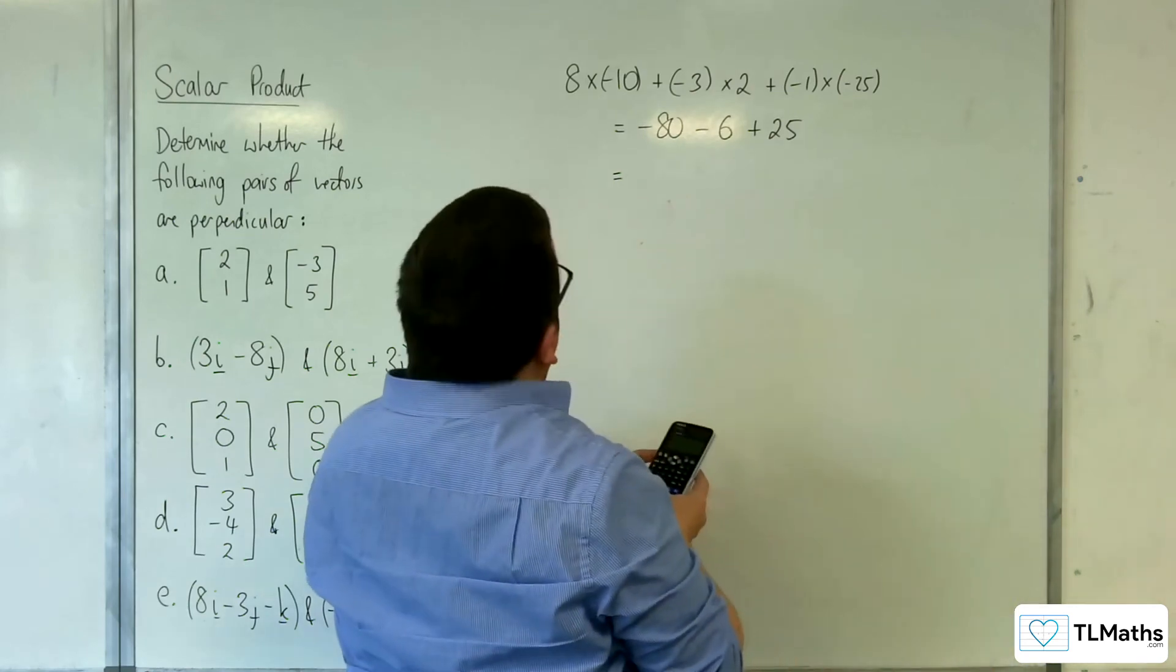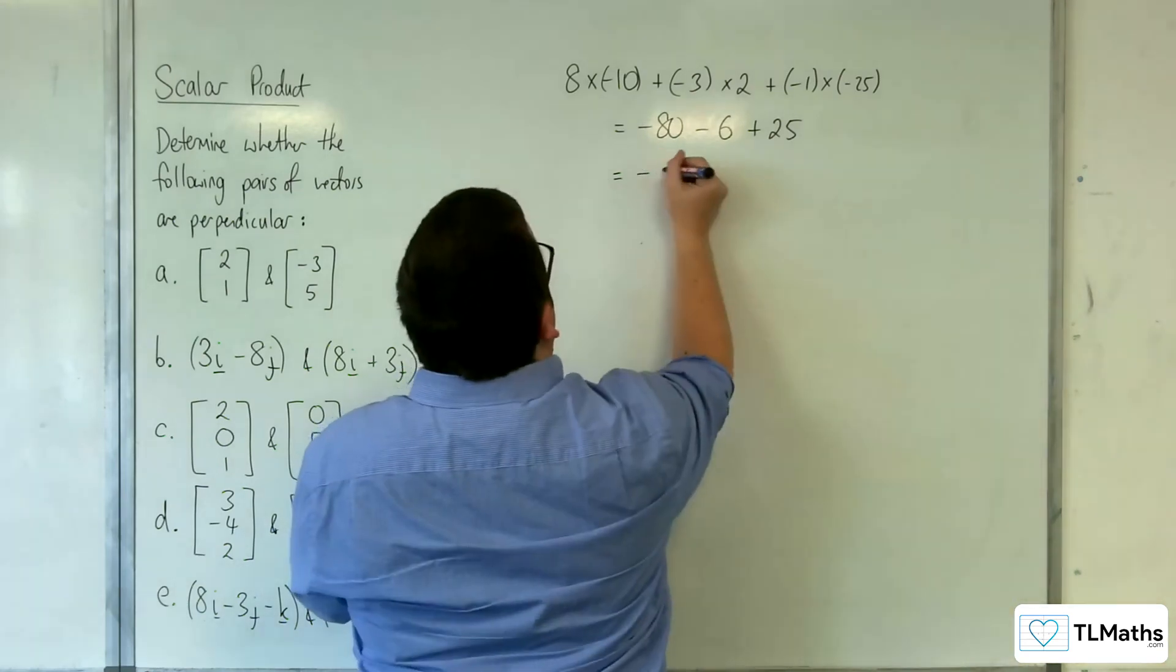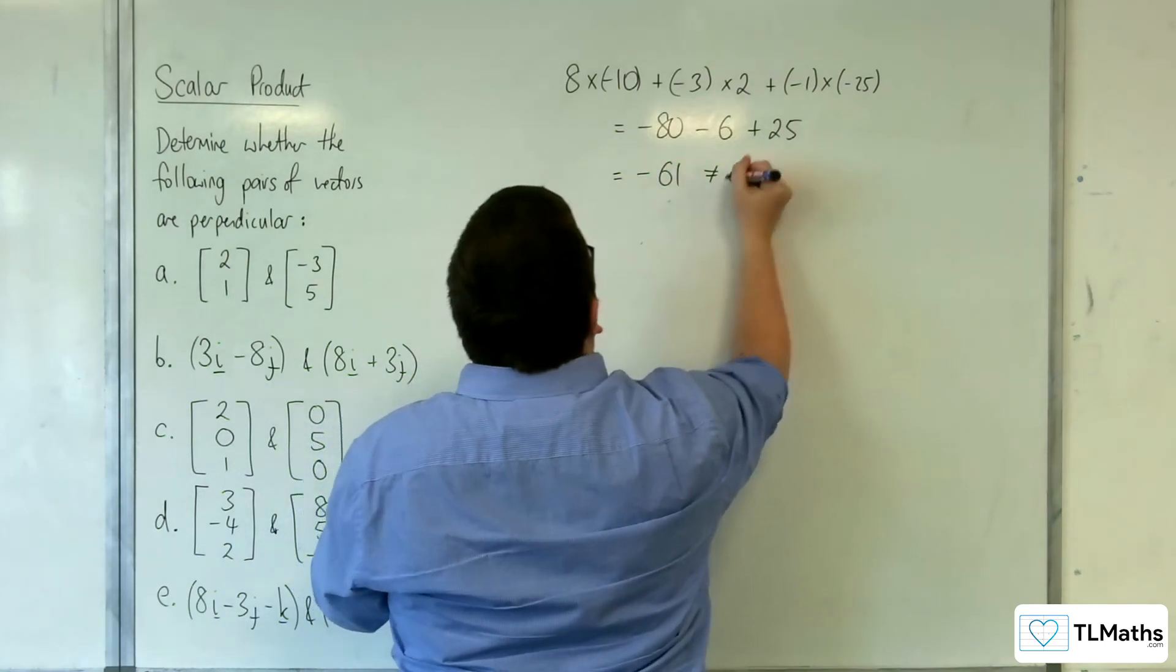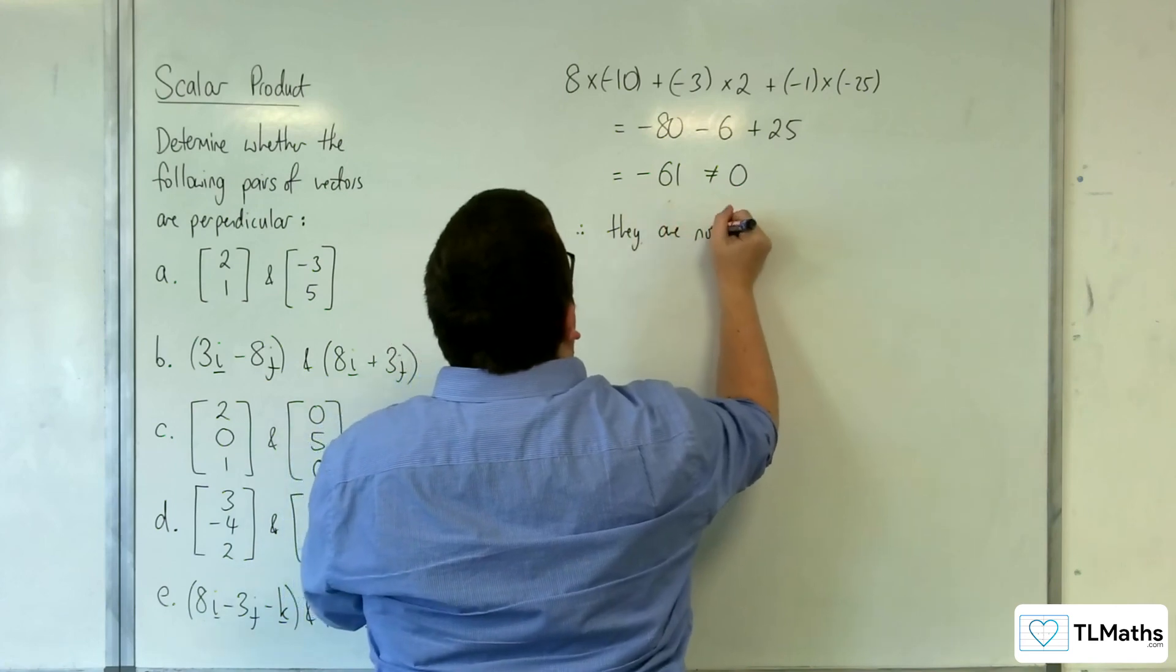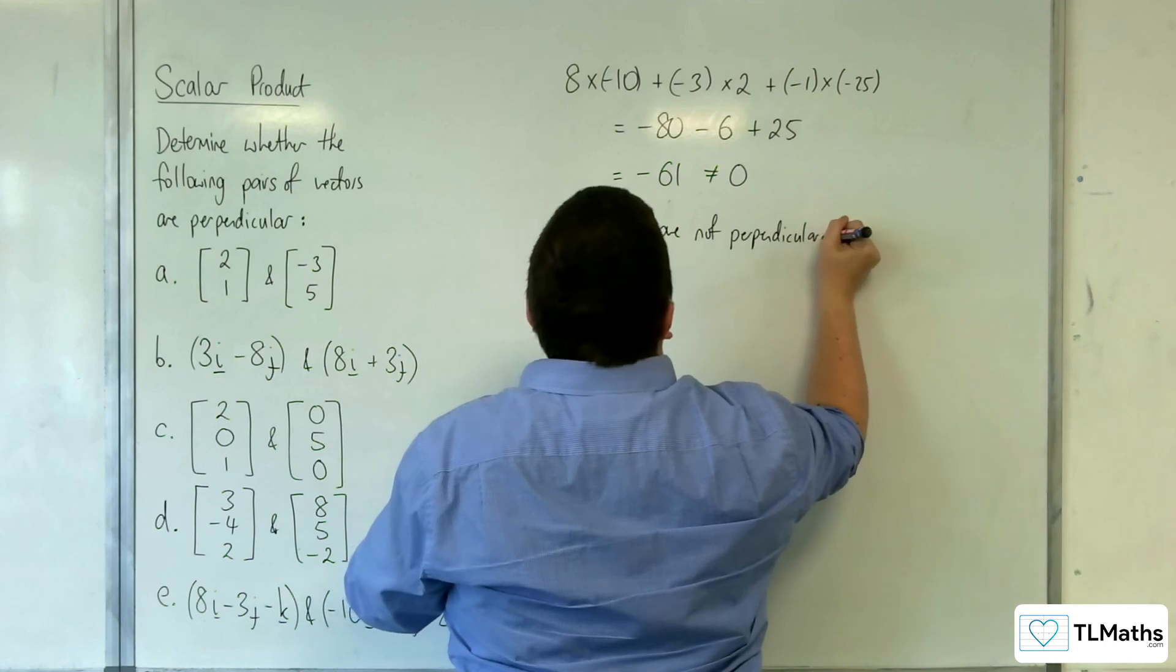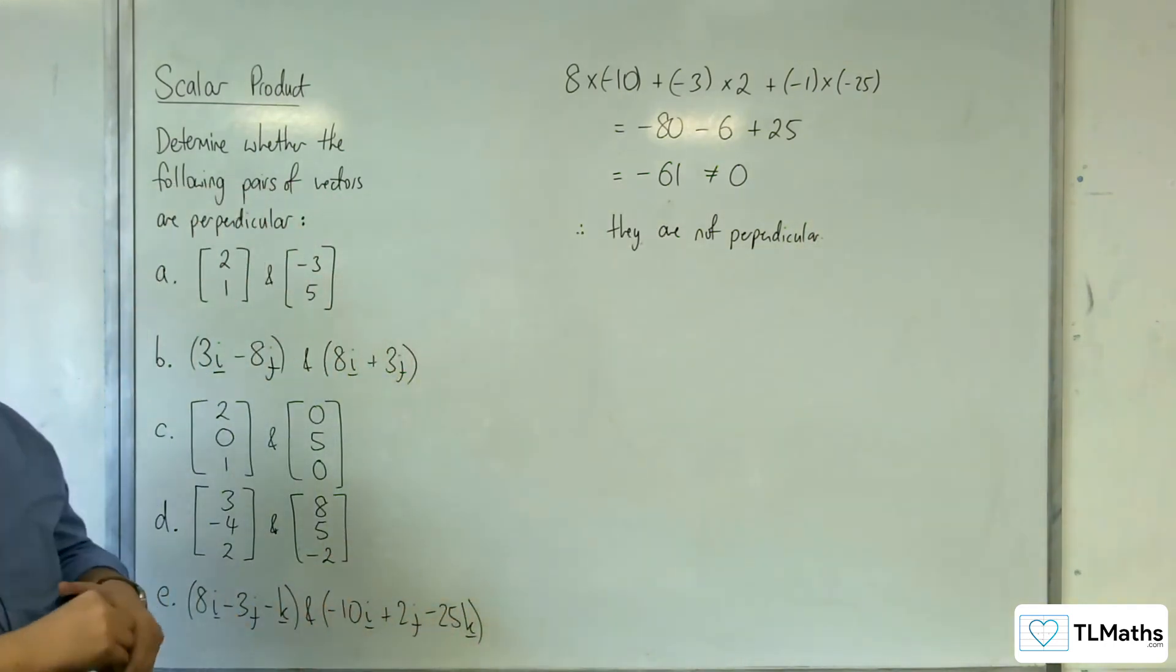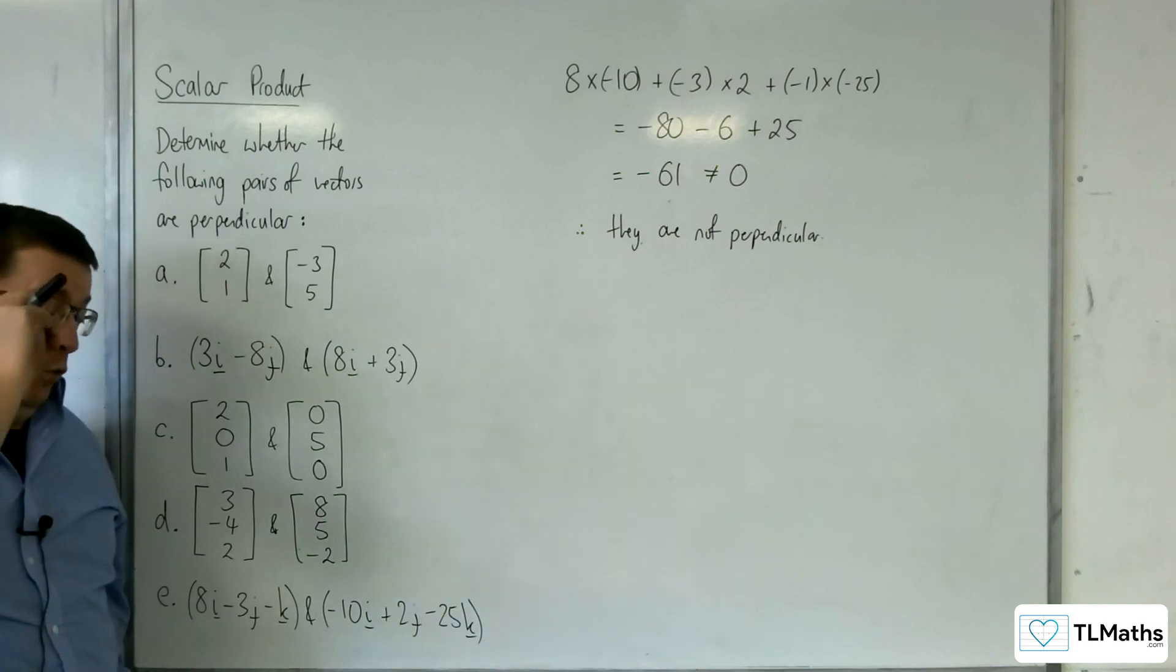What have we got there? So minus 86 plus 25, so minus 61, which of course is not 0. Therefore, they are not perpendicular. OK, so just finding the scalar product and telling whether it's 0 or non-zero is all we need to do here.